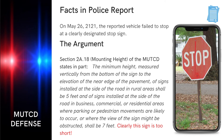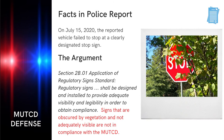The facts in the next example read: The reported vehicle failed to stop at a clearly designated stop sign. The MUTCD clarifies the height of the stop sign in Section 2A.18 regarding the mounting height. The MUTCD states, in part, the minimum height measured vertically from the bottom of the sign to the elevation of the near edge of the pavement — of signs installed at the side of the road in rural areas shall be five feet, and of signs installed in business, commercial, or residential areas where parking or pedestrian movements are likely to occur shall be seven feet. Clearly this sign is neither, and it is too short.